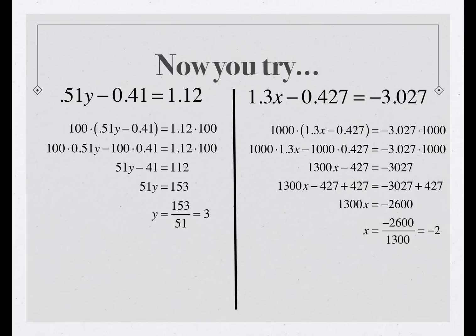Now, let's look at the solutions. On the left-hand equation, we have three numbers, all of which have two decimal places. So, the critical step is to multiply each side of the equation by 100 to clear all three decimals. If we multiply the left side by 100, we get 100 times the left side and 100 times the right side. 100 times 0.51 is 51, minus 100 times 0.41 is 41, equals 112.